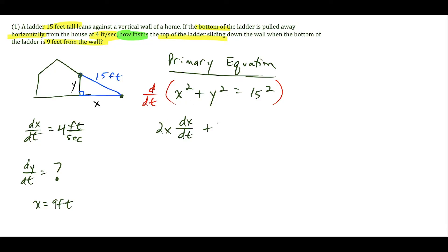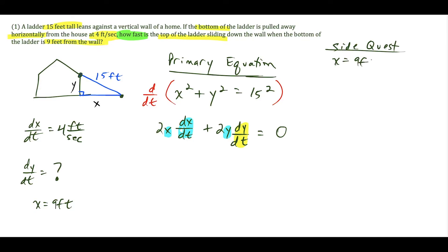Taking the derivative with respect to time using the chain rule gives us 2X(dx/dt) plus 2Y(dy/dt) equals zero, since the derivative of the constant 225 is zero. We're looking for dy/dt, which means we need values for X, dx/dt, and Y. We have X and dx/dt, so we need to solve for Y — this is where we go on what I like to call a side quest.